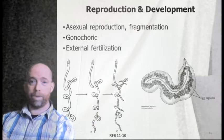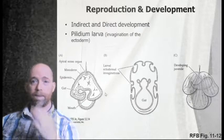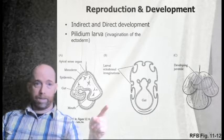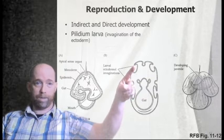Nemerteans have asexual reproduction and are also gonochoristic with external fertilization. Some can be broken off to produce tiny new individuals. Females are filled with egg capsules. One of the characteristic larval stages is the mushroom-cap shaped pilidium larva, characterized by invaginations of the ectoderm.